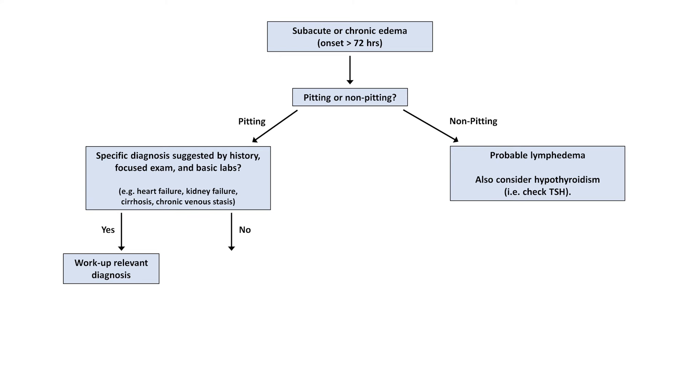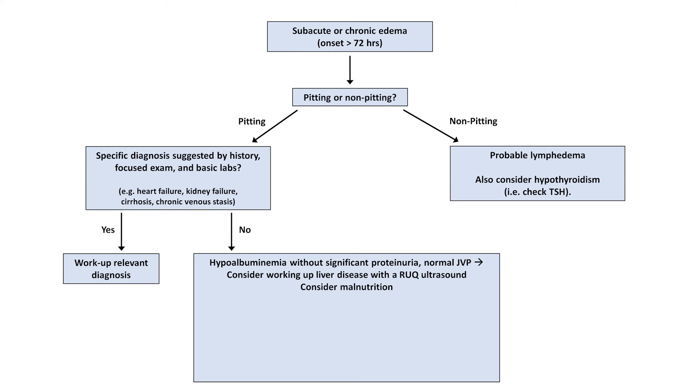If there is not a specific diagnosis suggested yet, consider the albumin, presence or absence of proteinuria on UA, and whether the JVP is elevated or normal. If albumin is low, there is no significant proteinuria, and JVP is normal, consider working up liver disease based on your clinical suspicion and other lab tests with a right upper quadrant ultrasound, but also consider malnutrition.